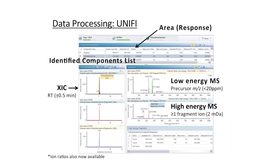There's been at least one fragment ion detected in the high-energy mass spectrum with mass accuracy within 2 millidaltons of expected. In this screen I can interact with the extracted ion chromatograms, see the time alignment of the data, and see the mass spectra. I can also see how intense the signal was in terms of the area response of each analyte.